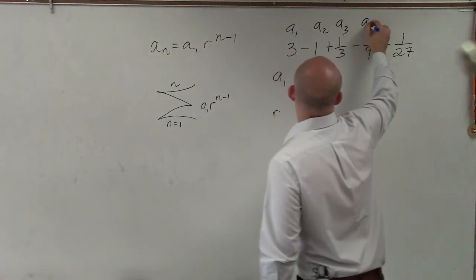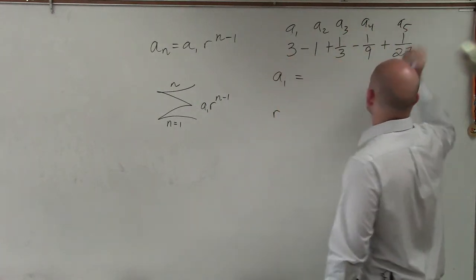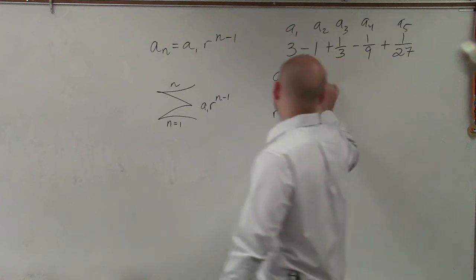As you can see, we have multiple terms in this sequence here. We actually have five of them. So a sub 1 is going to be 3.